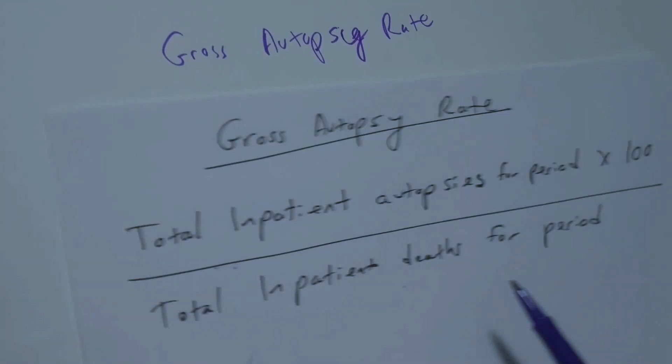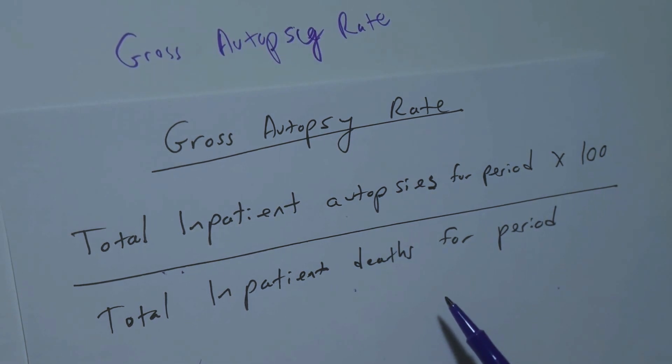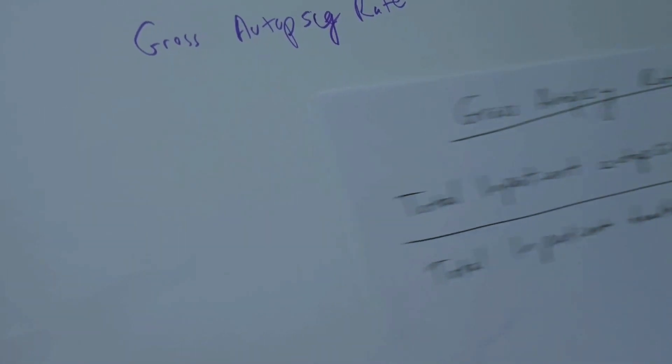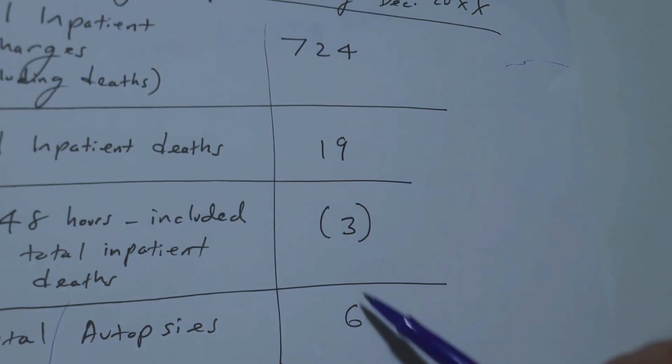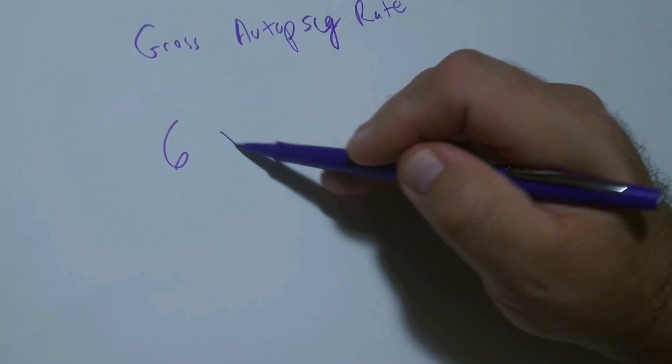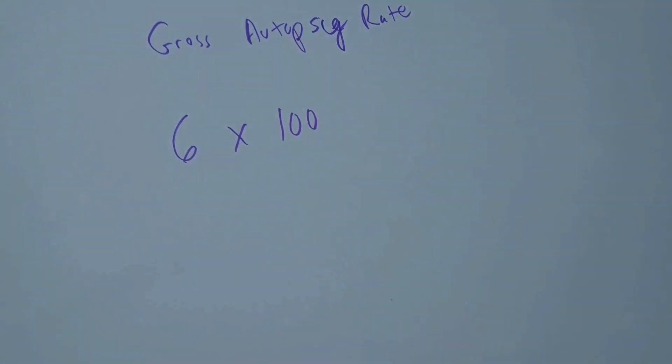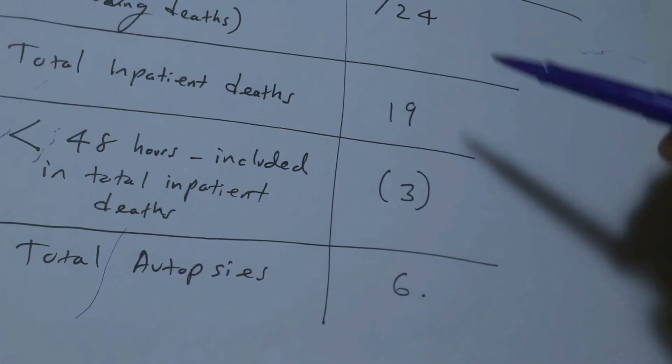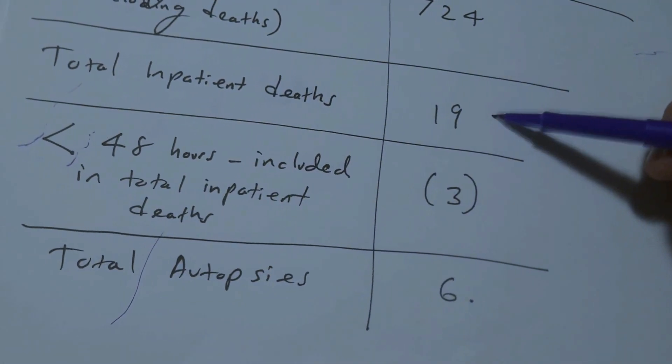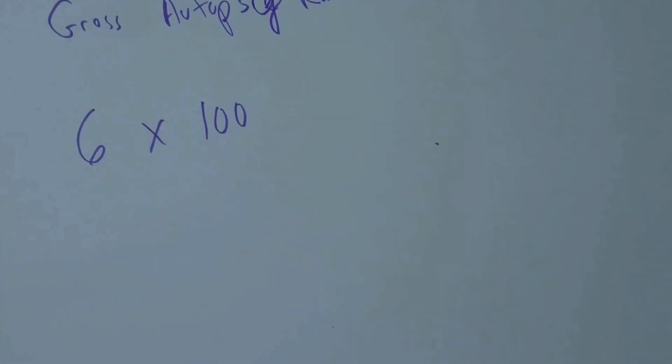So the total inpatient autopsies from our data, if you recall, is 6. So we're going to multiply that by 100. So 6 times 100, and then I'm going to divide it by total inpatient deaths for the period, which is 19.